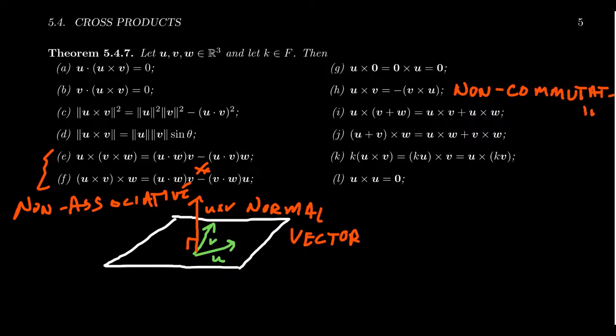Now, admittedly, we've seen this with matrix multiplication. Matrix multiplication is non-commutative. So in some respect, we're kind of used to that. But a non-associative operation, we haven't really seen that too much at all yet.